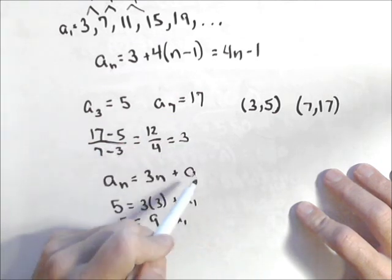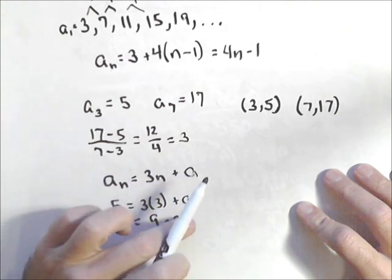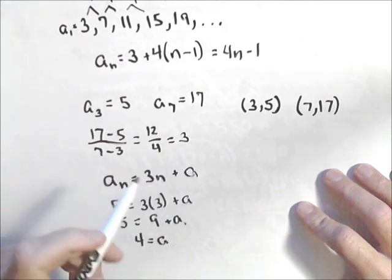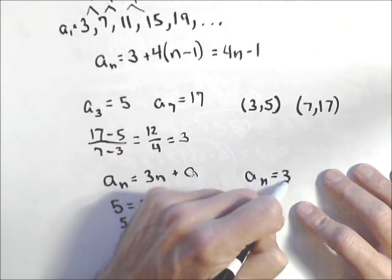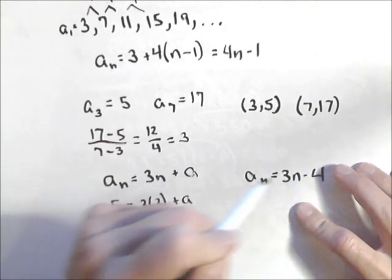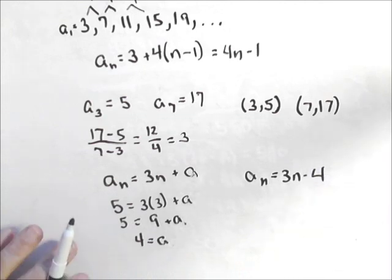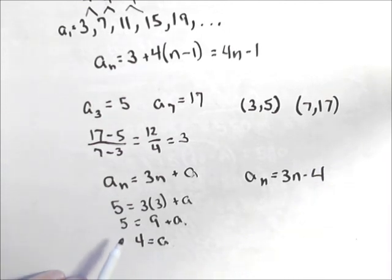Probably shouldn't call that a first term. Let's just call it a. Not our first term. But in this model, a has to be negative 4. So a sub n equals 3n minus 4. Sorry, I actually called that the first term. Because it is a negative 4. And there's two different ways of getting the nth term of an arithmetic sequence.